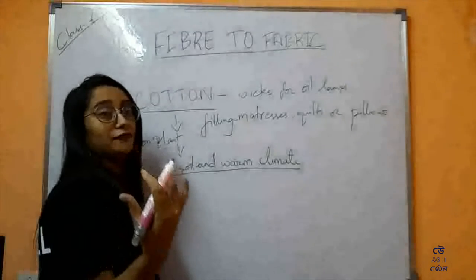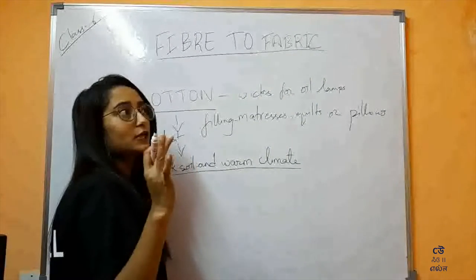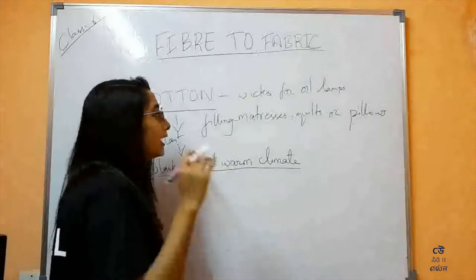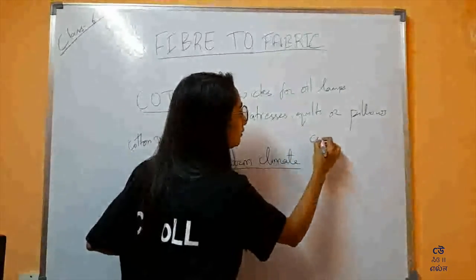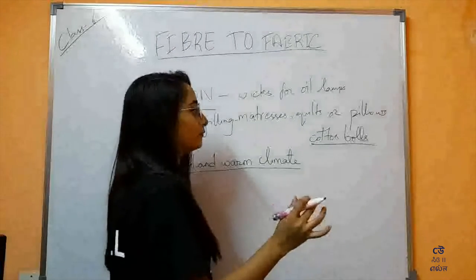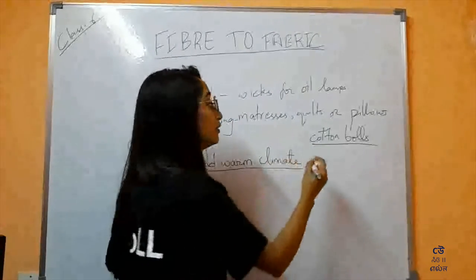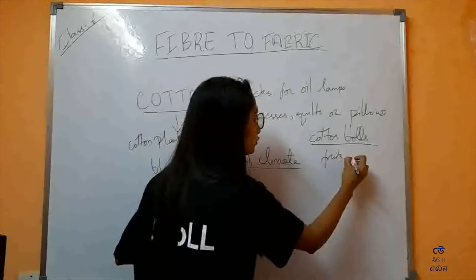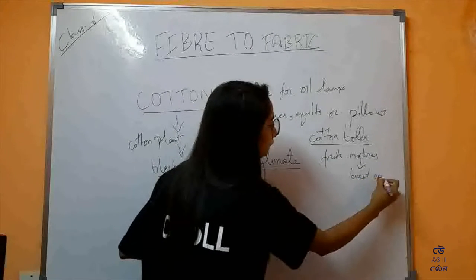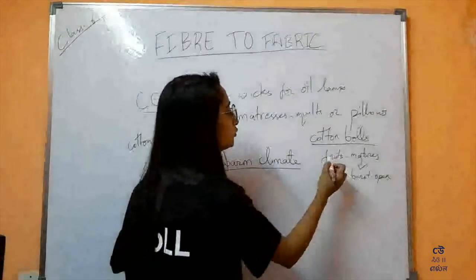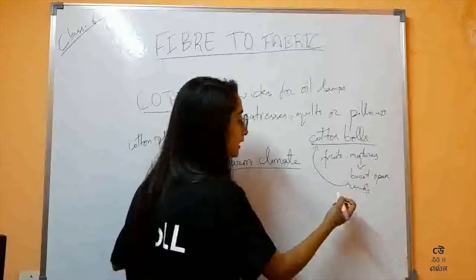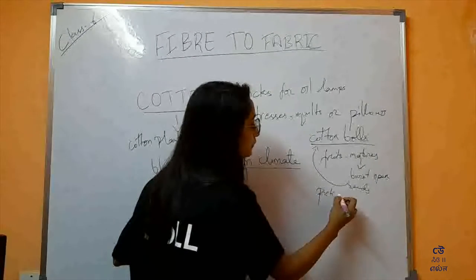Have you ever visited a cotton field? When it's picking time, it looks like the field is covered with snow. What happens is, the fruits of the cotton plant, when they mature, burst open, and seeds covered with cotton will be seen. How do we harvest this? It is picked by hand.